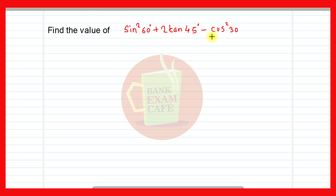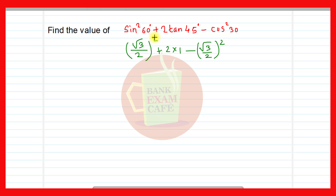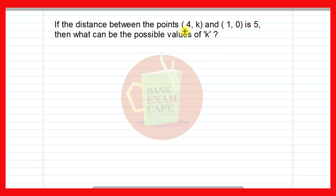Find the value of sin²60 + 2tan45 - cos²30. Substituting values: sin60 = √3/2, tan45 = 1, cos30 = √3/2. So we get (√3/2)² + 2×1 - (√3/2)². The sin²60 and cos²30 terms cancel each other out, leaving 2×1 = 2. This question carries one mark because you need to remember the values of sin60, tan45, and cos30.